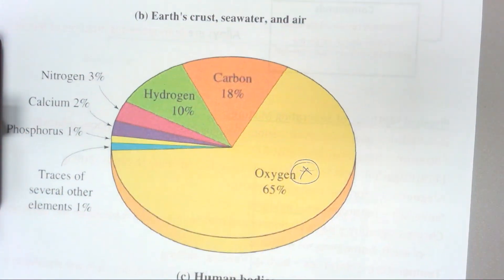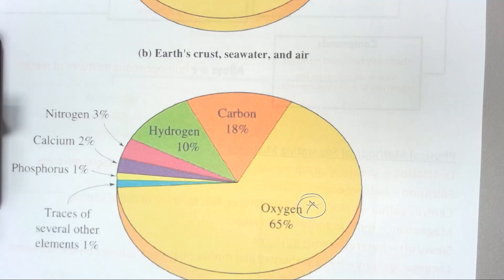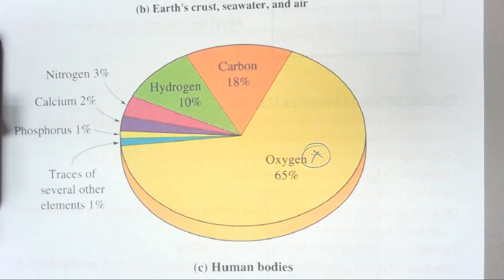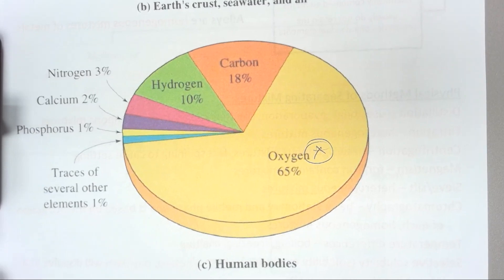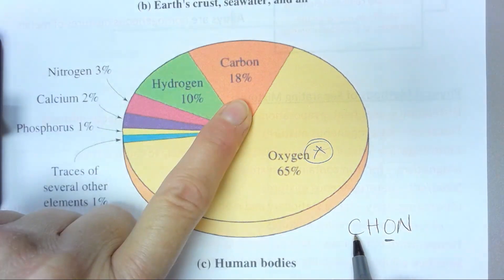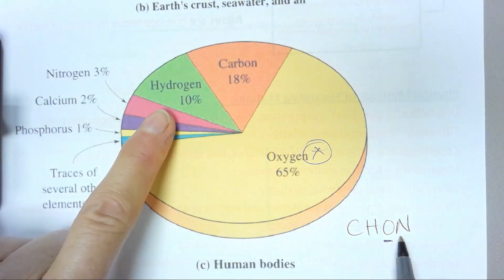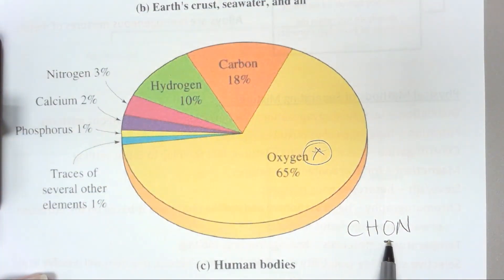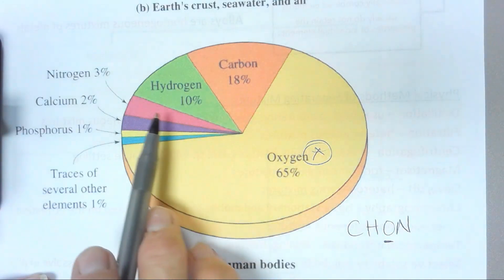Oxygen's number one in both of those. So if I ask you, what are you mainly made up of? You are mainly made up of oxygen. In fact, you can write CHON, and that's what you are mainly made up of with oxygen being your number one element. So it's oxygen first, then carbon, then hydrogen, and then nitrogen.